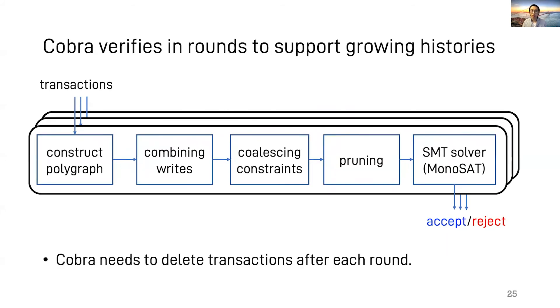In order to scale to an online database that has an ever-growing history, Cobra verifies in rounds. From round to round, Cobra needs to delete transactions. Please see the paper for details.